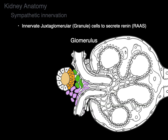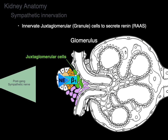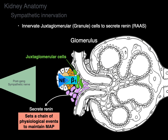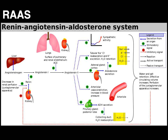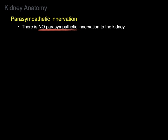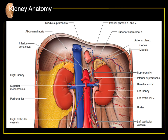The juxtaglomerular cells — juxta meaning next to the glomerulus — have beta-adrenergic receptors. When sympathetic nerves secrete norepinephrine and activate those beta-adrenergic receptors, the JG cells secrete renin, setting off a chain of physiological events to maintain mean arterial pressure. This is the RAS system — renin-angiotensin-aldosterone system — which causes production of angiotensin II, leading to reabsorption of sodium and chloride and production of aldosterone. There is no parasympathetic innervation of the kidney; any vagal fibers present are of no clinical significance. That is kidney anatomy in a nutshell.